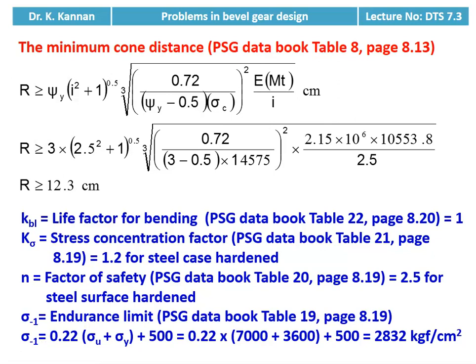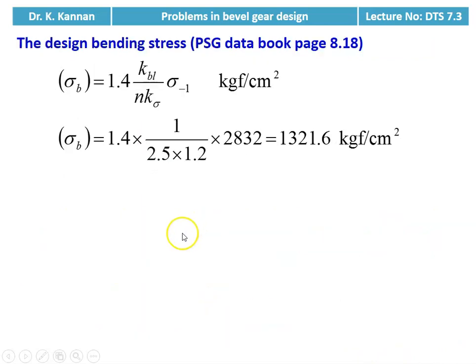Then we calculate the design bending stress. We require: KBL (life factor for bending) = 1 from table 22; K_sigma (stress concentration factor) = 1.2 from table 21; n (factor of safety) = 2.5 from table 20 for steel surface hardened. The endurance limit sigma_{-1} from table 19, page 8.19: sigma_{-1} = 0.22 × (sigma_u + sigma_y) + 500 = 0.22 × (7000 + 3600) + 500 = 2832 kgf/cm². Design bending stress: sigma_b = 1.4 × KBL / (n × K_sigma) × sigma_{-1} = 1.4 × 1 / (2.5 × 1.2) × 2832 = 1321.6 kgf/cm².